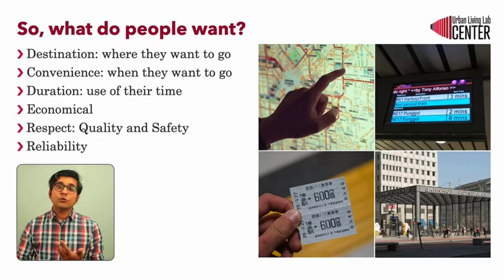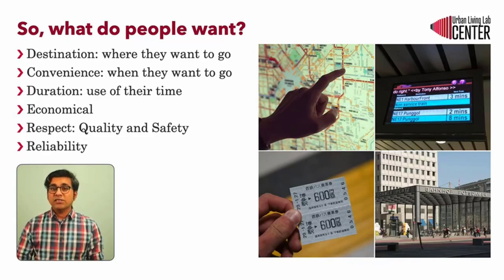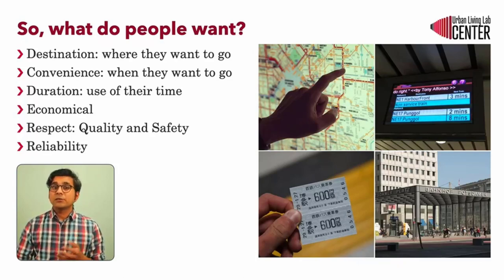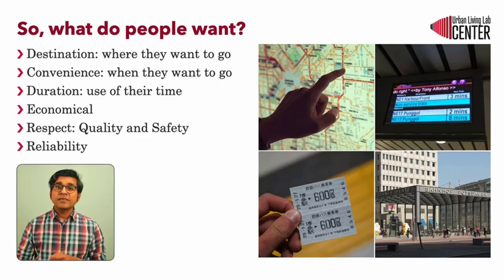Destination means that people want to know if the public transportation system goes to where they want to go. Second is convenience — people want to use public transport when they want, and they need to be able to easily change their travel plans and expect to continue their travel reasonably with transit. Third is duration: the duration of the entire trip from the moment they leave the doorstep to the time they reach their final destination, including the time taken to wait.